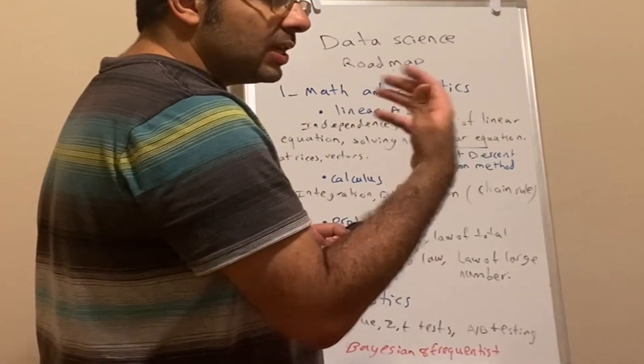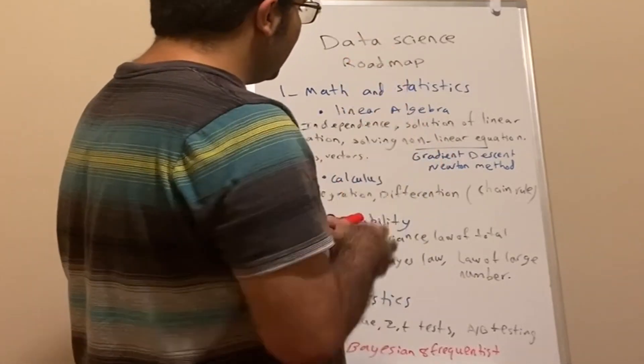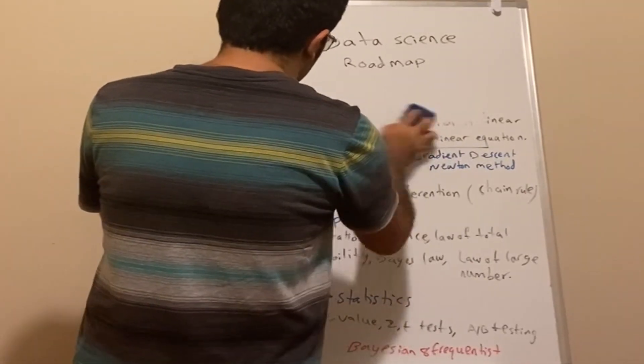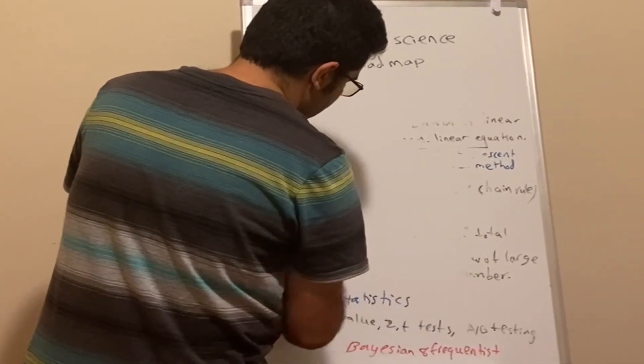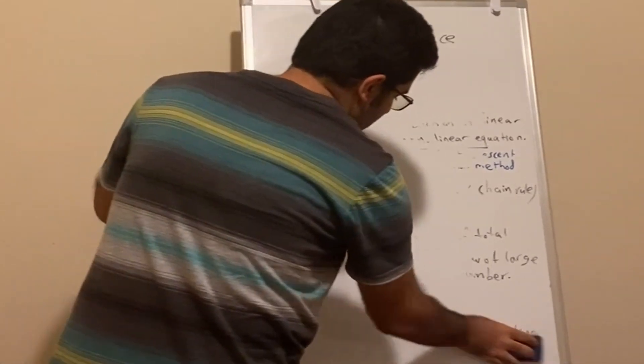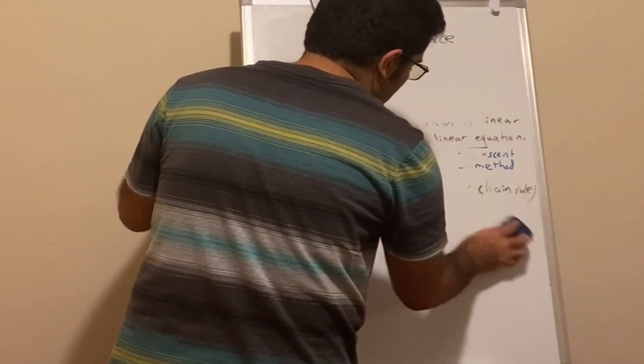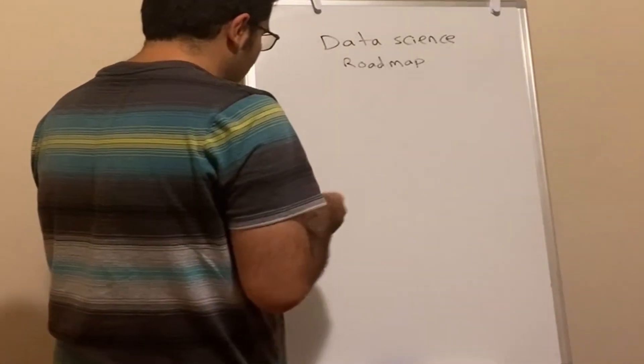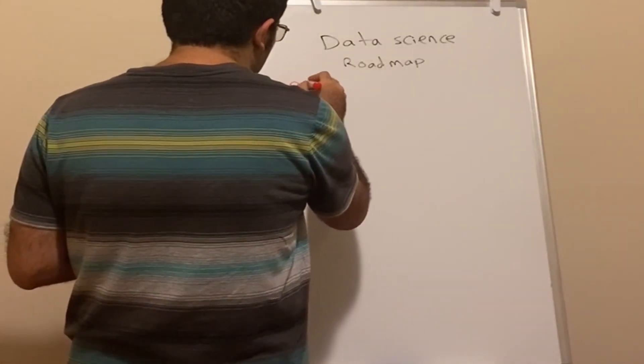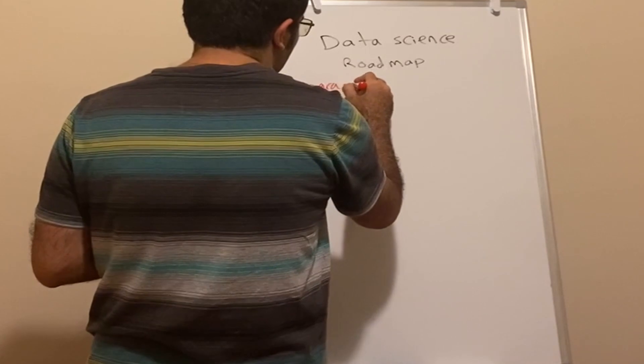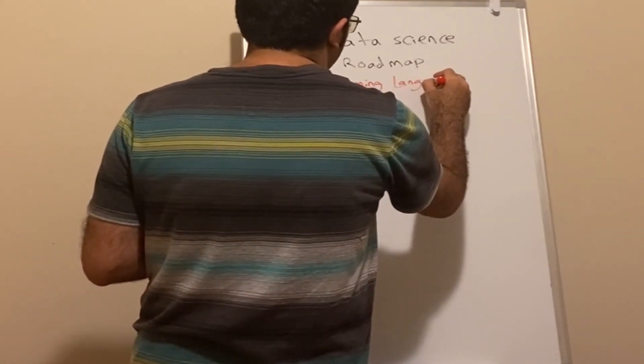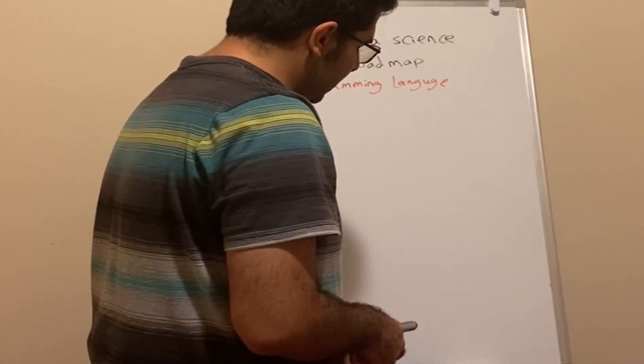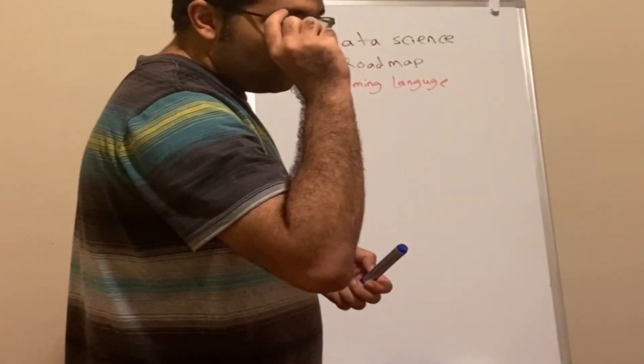I'm also going to talk about the second step. Once we're composed of these concepts, we need to understand what programming language we need for data science. Let me erase this and start on programming languages. What do we need to know about programming languages? Number two is programming language. Number one was basic analysis, formal analysis. The absolute most important programming language you need is Python.